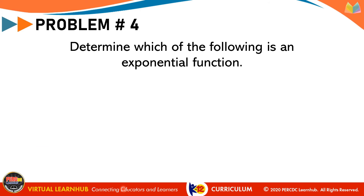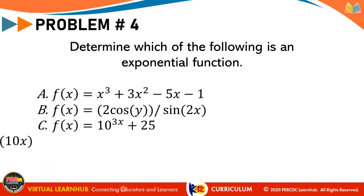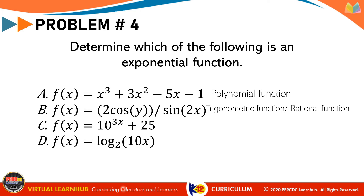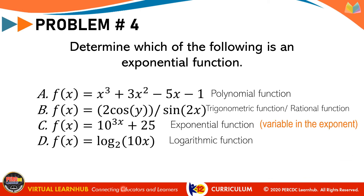For problem number 4, determine which of the following is an exponential function. A: f(x) equals x cubed plus 3x squared minus 5x minus 1. B: f(x) equals 2 cosine y over sine 2x. C: f(x) equals 10 raised to 3x plus 25. And D: f(x) equals log of 10x to the base 2. A is a polynomial function. B is a trigonometric or rational function. D is a logarithmic function. And C is the exponential function because it contains the variable in the exponent. In letter A, the variable is in the base with a constant exponent, whereas in an exponential function, the base is constant and the variable is in the exponent.